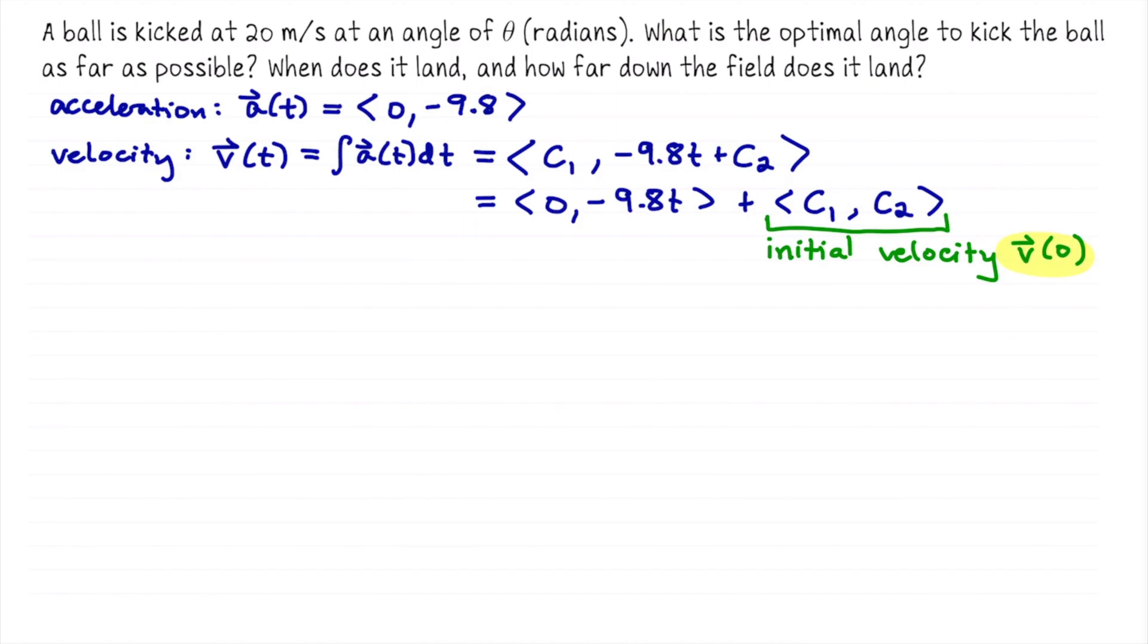We're going to find this vector using the first sentence in the problem. The information that the ball is kicked at 20 meters per second tells us the speed at the moment that we kick the ball. So 20 is going to be the magnitude of the initial velocity. And then we're told that it's kicked at some angle that we are going to work out later, but that angle gives us a sense of direction. So I think it's helpful in this moment to decompose this vector into a magnitude times a unit-linked sense of direction.